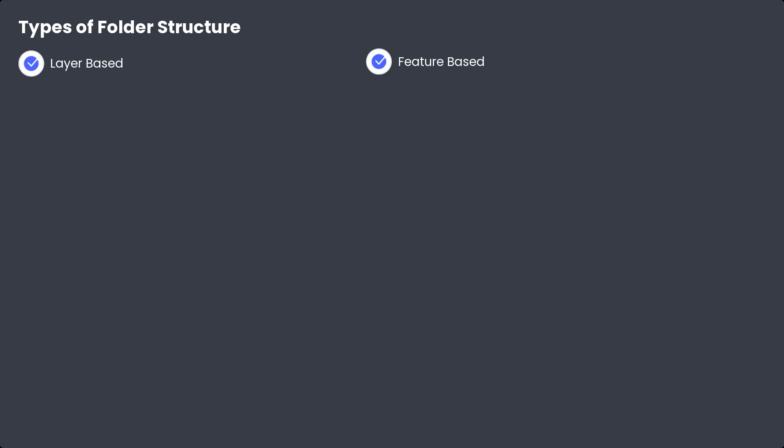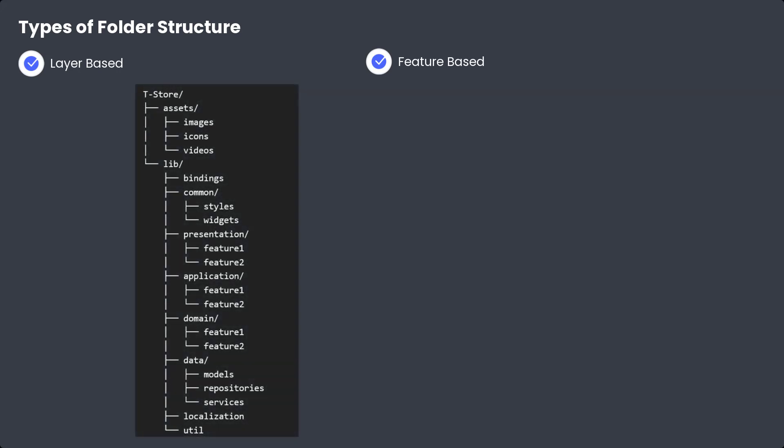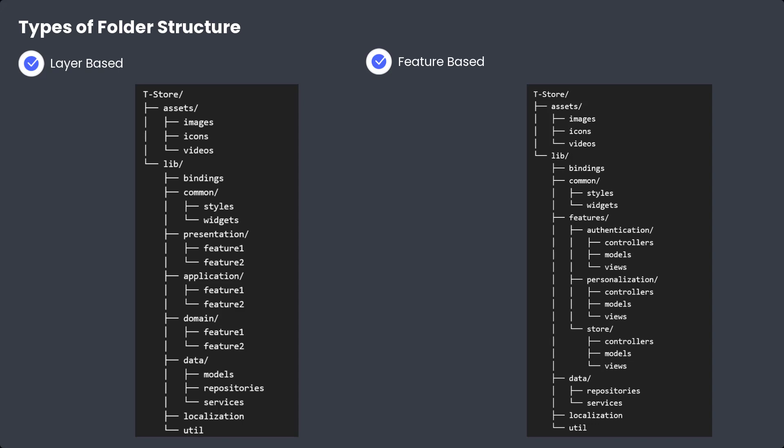There are two types of folder structures the Flutter community adopts. The first is the layer-based folder structure, and the second is the feature-based folder structure. In the layer-based approach, you have layers — such as presentation, domain, and data, or MVC-style controllers, views, and models — and inside those layers you place all the features. So for authentication, you would have a presentation copy, domain copy, and data copy all divided according to layers.